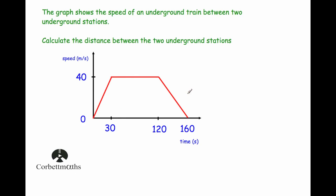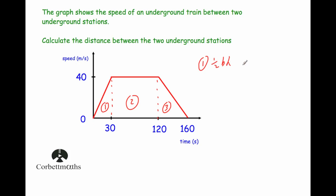Sometimes questions involve straight lines, so no estimation is needed. This question shows a speed-time graph for an underground train between two stations. The train accelerates from 0 to 40 m/s over 30 seconds, travels at 40 m/s until 120 seconds, then decelerates to rest by 160 seconds. We split it into a triangle, a rectangle, and a triangle.